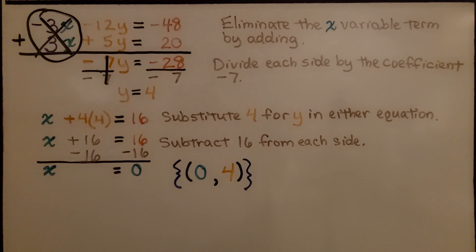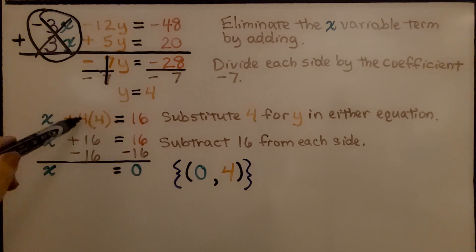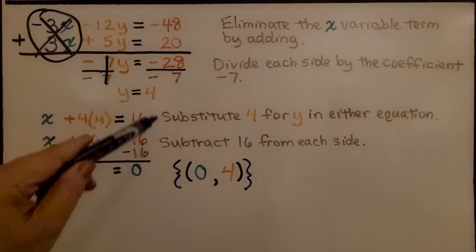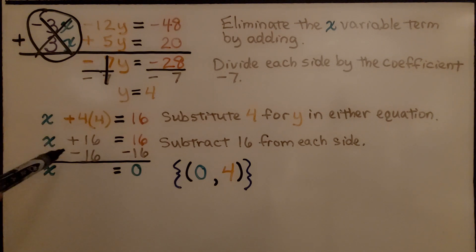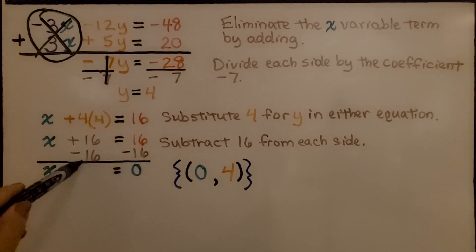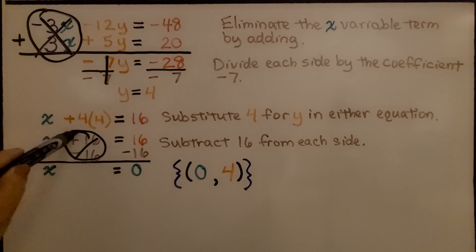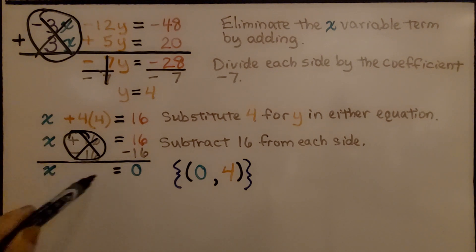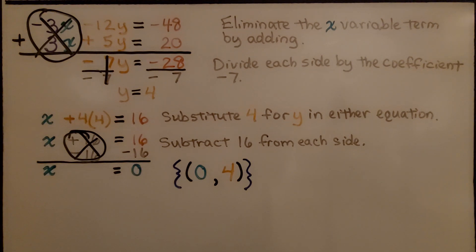We substitute 4 for y in either equation. The first equation was x plus 4y is equal to 16, so we have x plus 4 times 4 equals 16, which gives x plus 16 equals 16. We subtract 16 from each side, making a zero pair, and we get x equals 0. The solution is x equals 0, y equals 4.